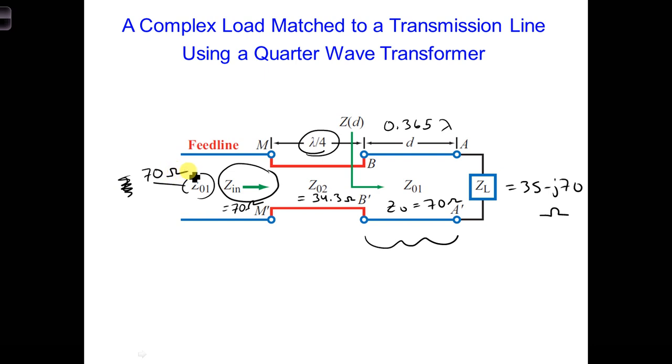As a result, since we're using two different Z naughts here, two different types of transmission lines, that's why you can see in this graph or diagram there's Z naught 1 and Z naught 2, and Z naught 1 again. That's to differentiate between the two characteristic impedances: 70 ohms, 34.3 ohms, and 70 ohms again.